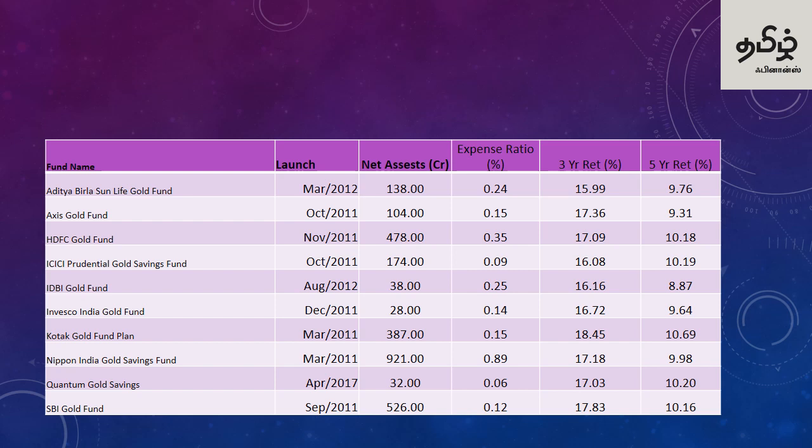The highest net assets are held by Nippon India Gold Savings Fund at 921 crore, followed by SBI Gold Fund at 526 crore.